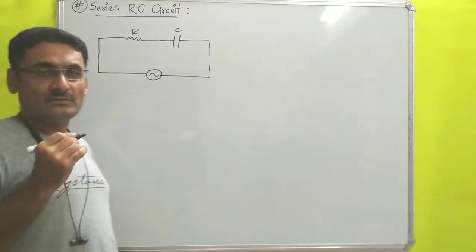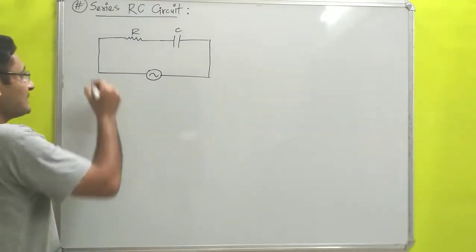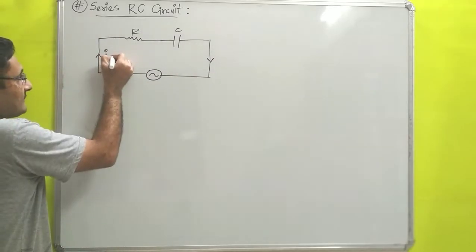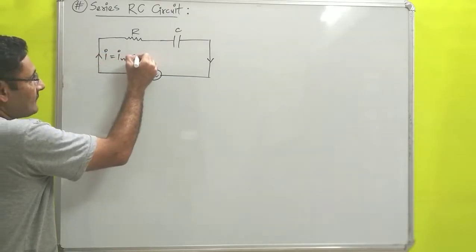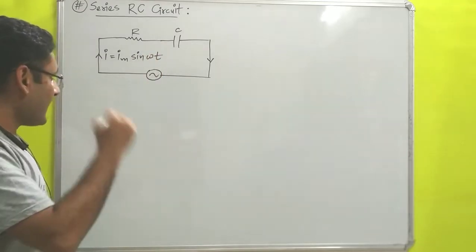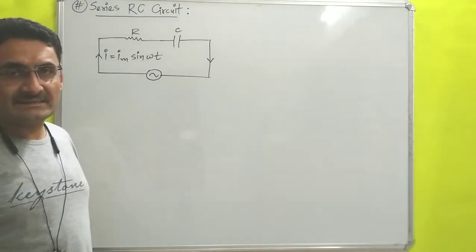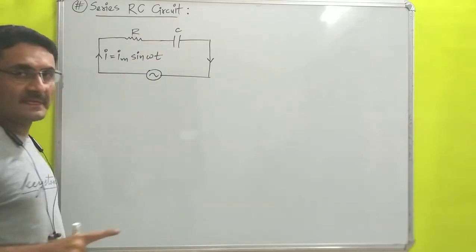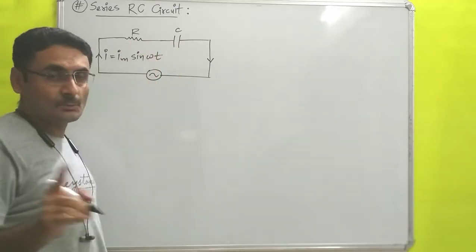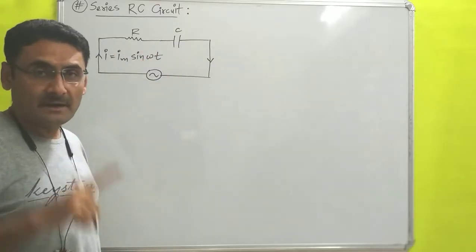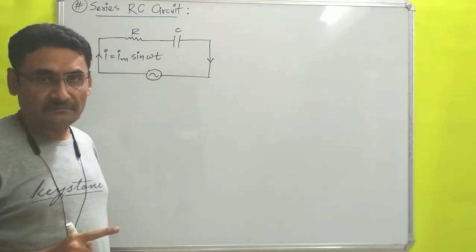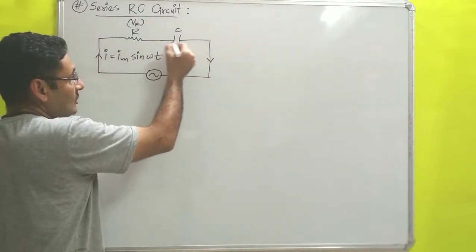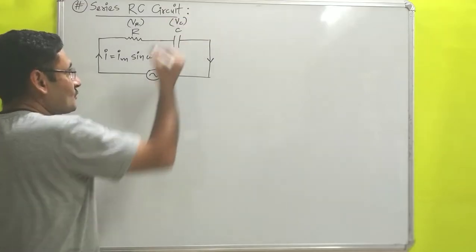For our analysis, we will consider that at some time instant current is flowing in the clockwise direction, and the equation of current we will consider as I = Im sin(ωt). Since resistor and capacitor are both connected in series, the same amount of current flows through both. So the current equation for both is the same, but the potential across both devices is different. Let us say potential across the resistor is VR and across the capacitor is VC.